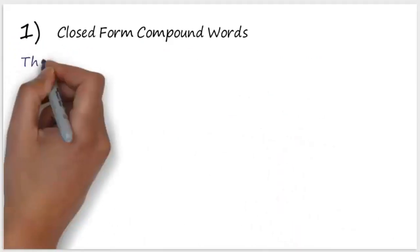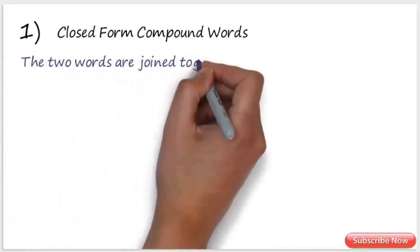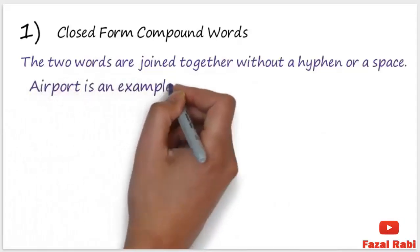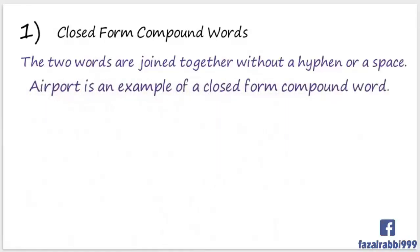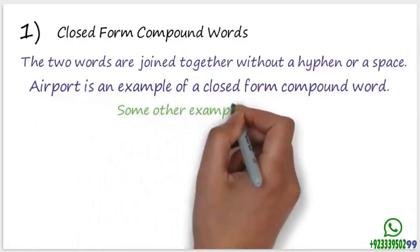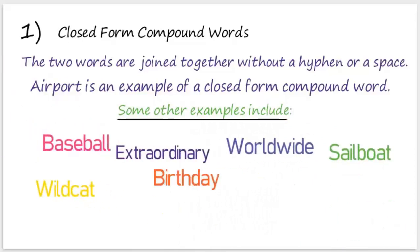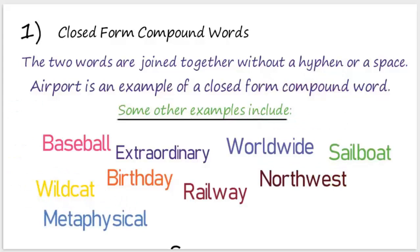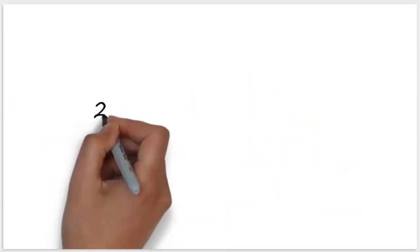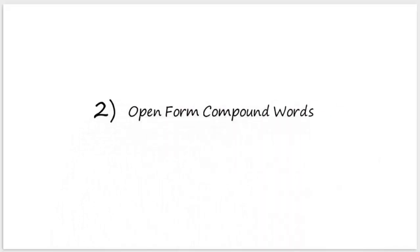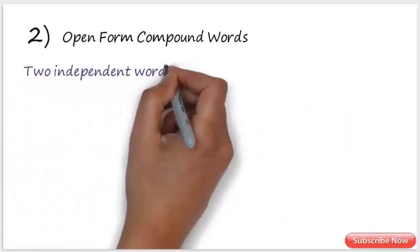The two words are joined together without a hyphen or a space. 'Airport' is an example of a closed form compound word. Some other examples include baseball, worldwide, birthday, metaphysical, superman, etc. Number two: open form compound words. Two independent